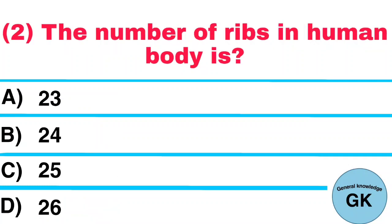Question number 2. The number of ribs in human body is? A. 23. B. 24. C. 25. D. 26. Answer: 24.